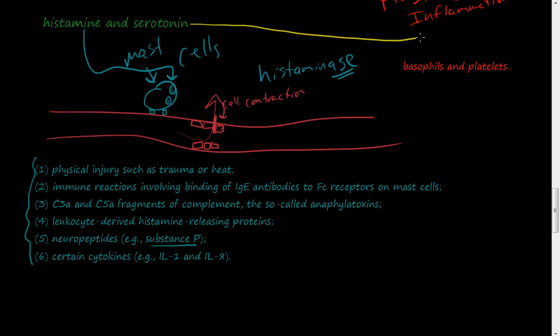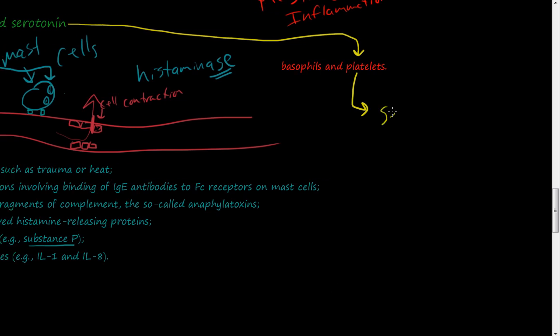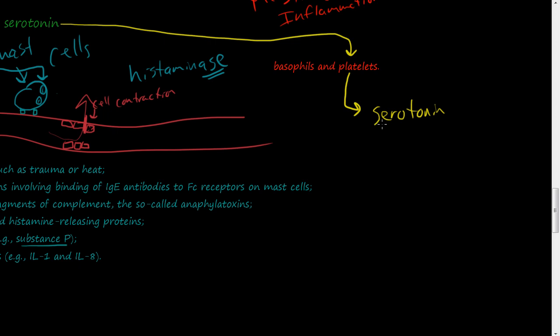So serotonin is also secreted by platelets. And serotonin does almost the same thing as histamine. It's called a vasoactive substance, which causes cell contraction and things like that, causing vascular permeability. So histamine and serotonin are responsible usually for vascular permeability and these vascular changes.